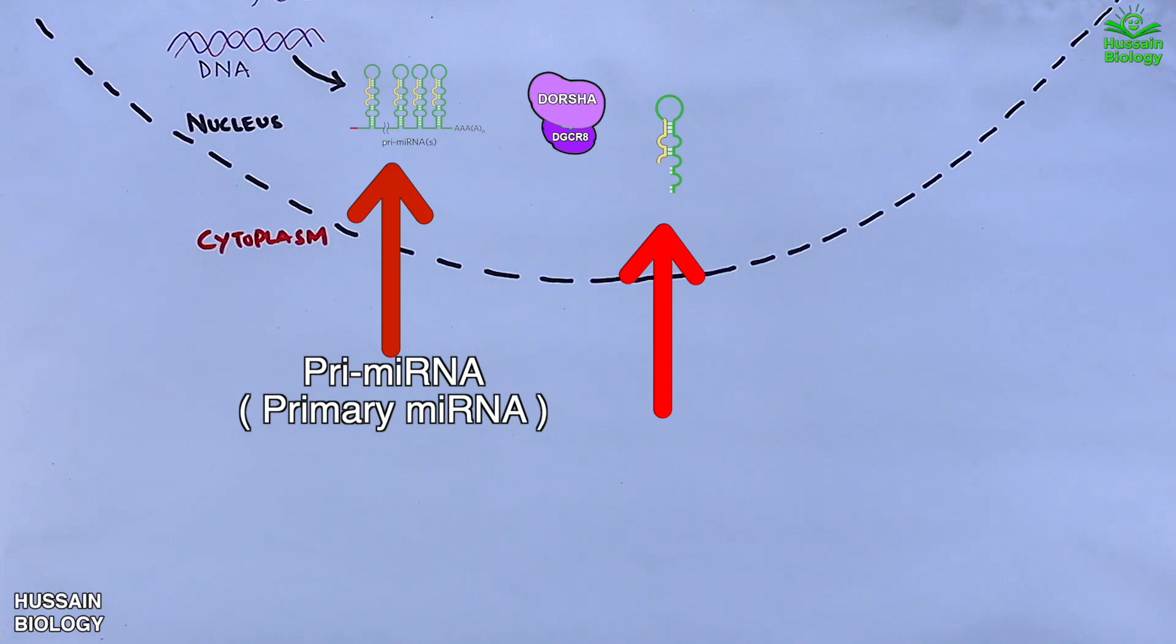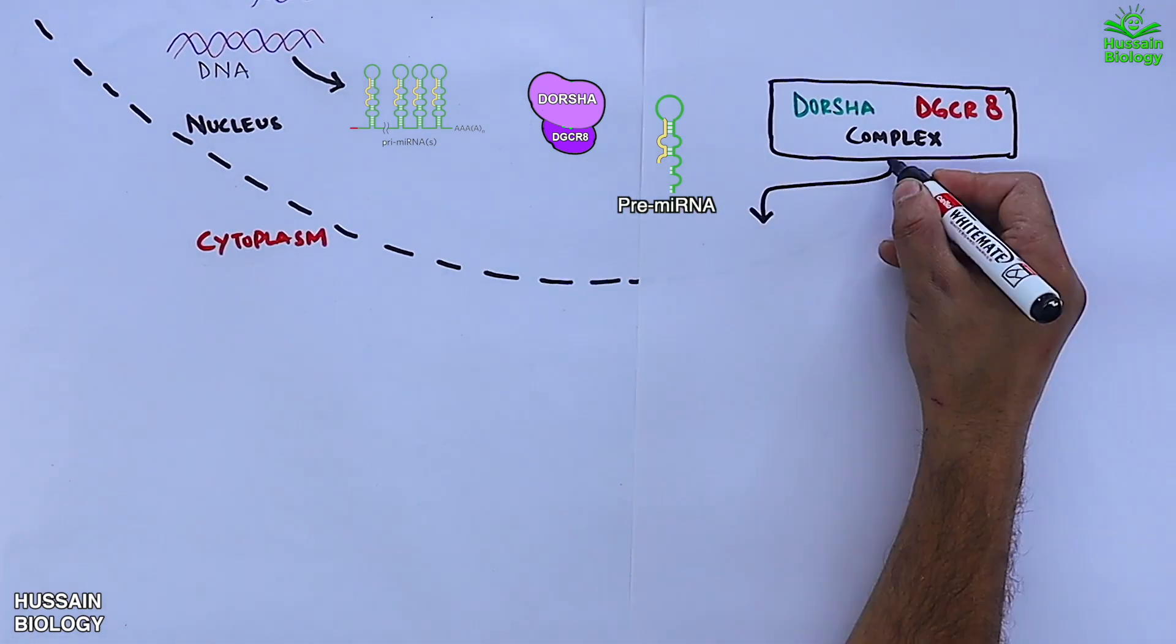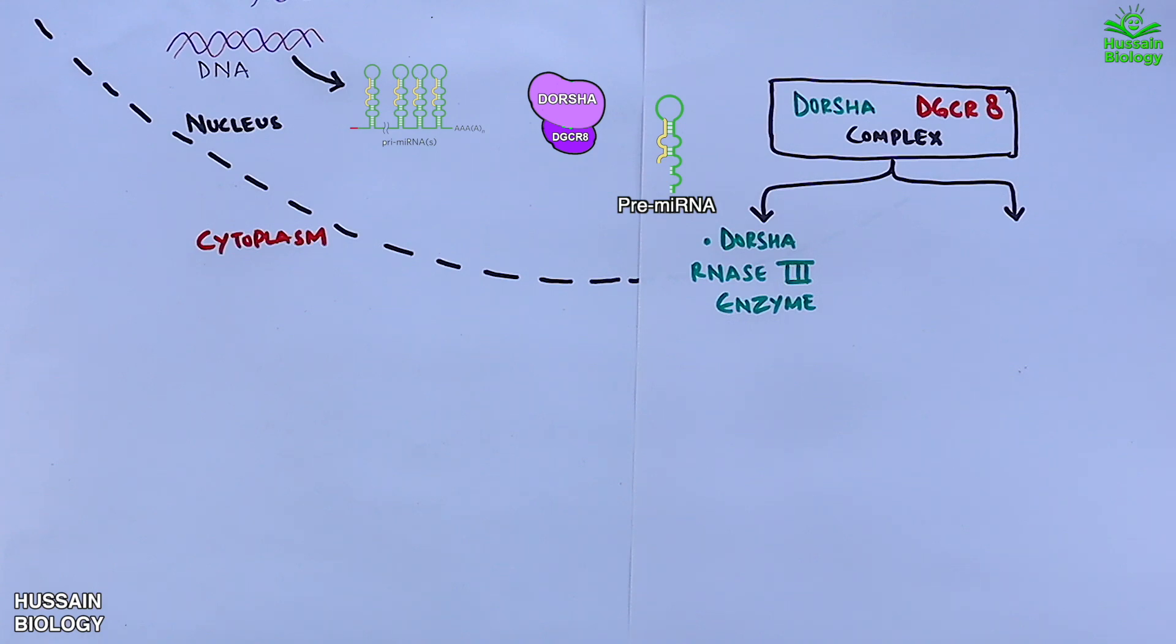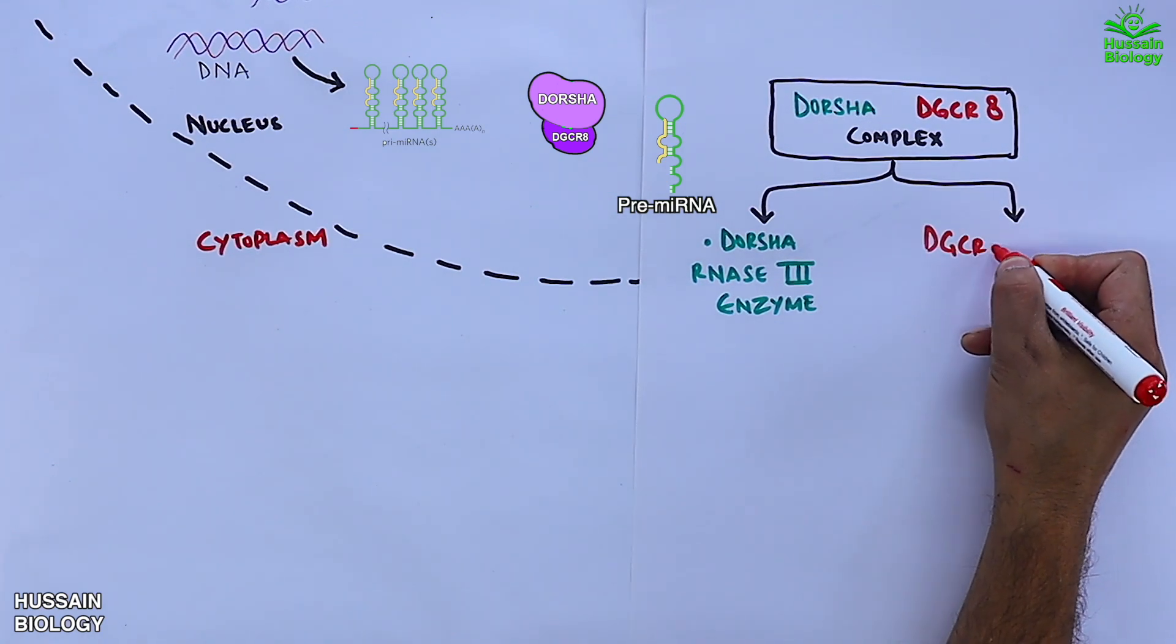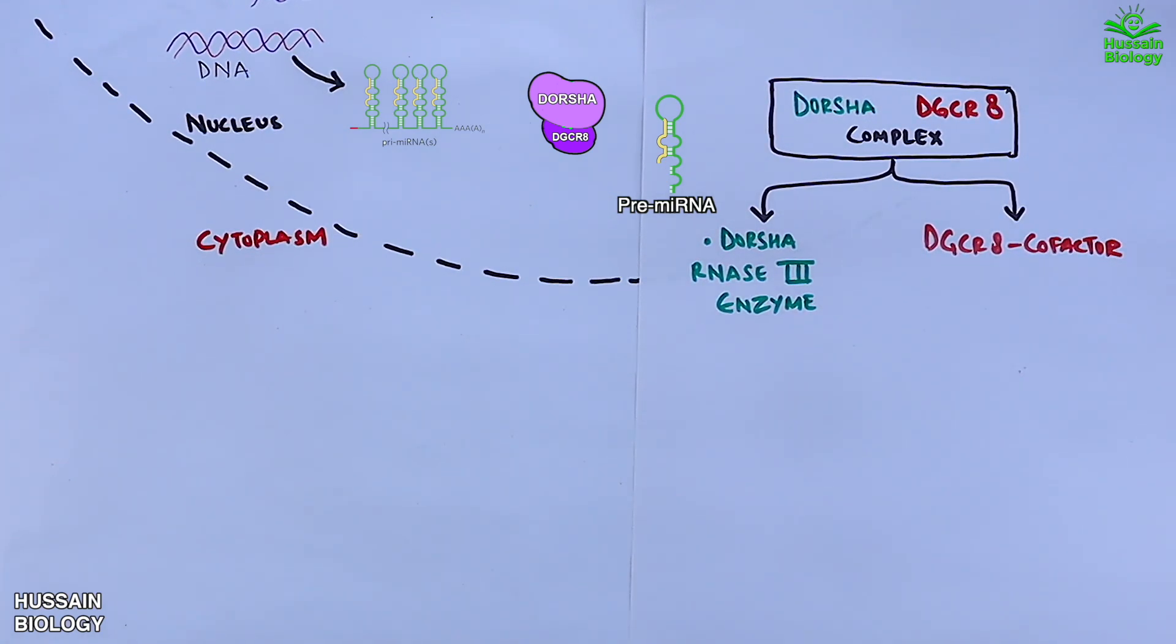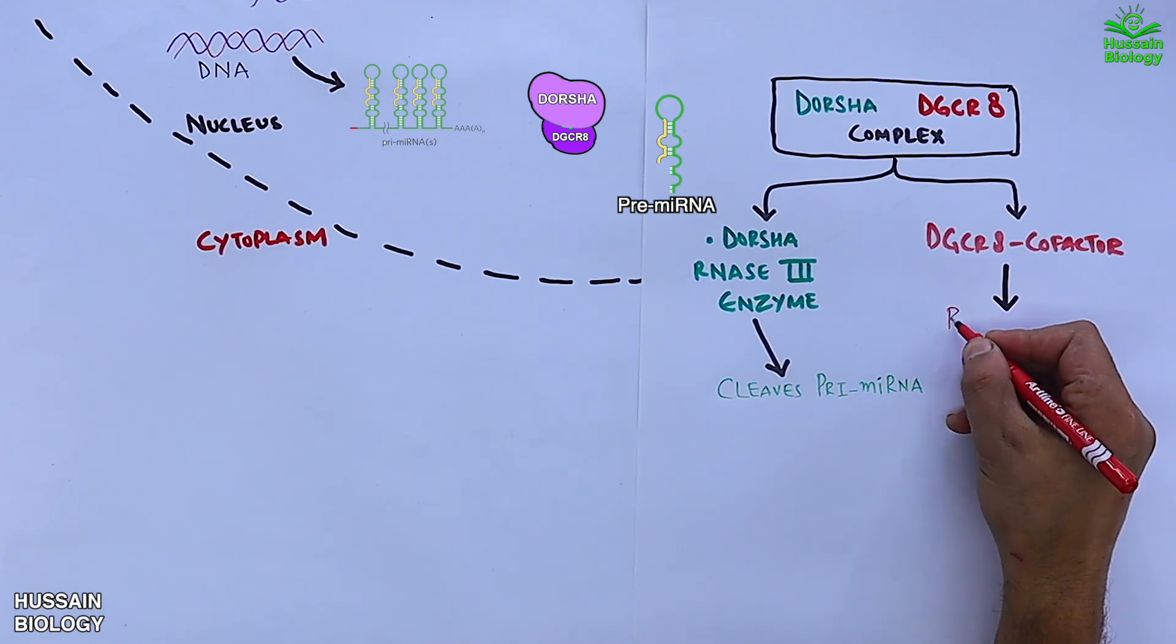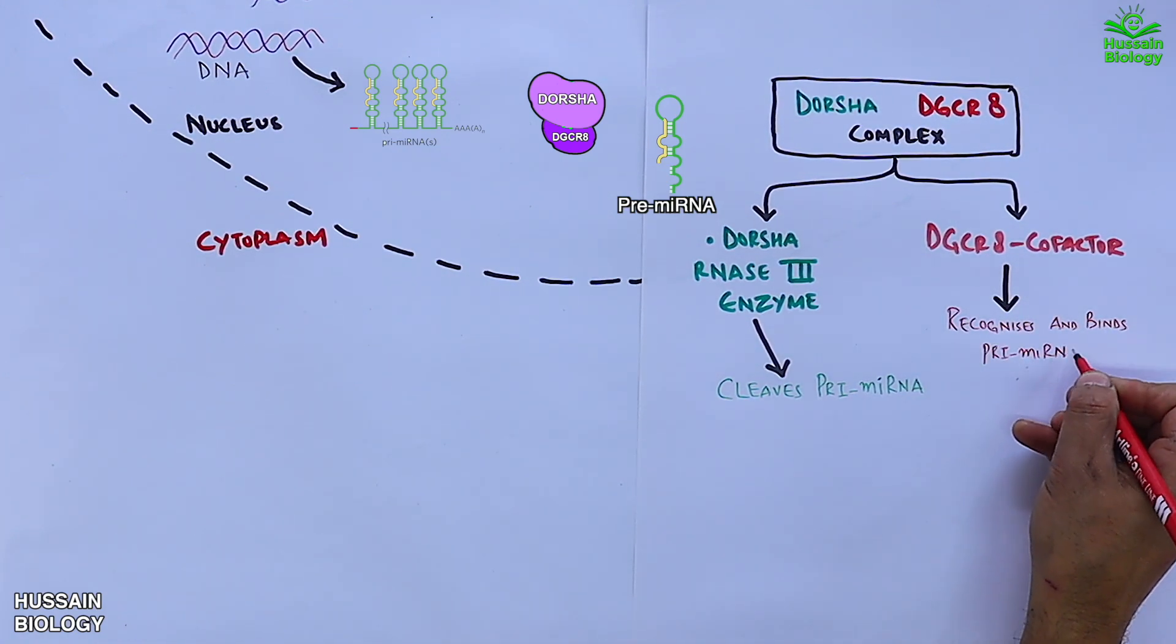If we see the details of cleavage, the Drosha acts as an RNase enzyme 3, whereas the DGCR8 acts as a cofactor. The RNase 3 part of Drosha cleaves primary microRNA, and then the DGCR8 cofactor recognizes and binds the primary microRNA.